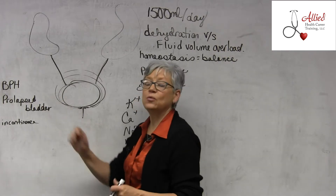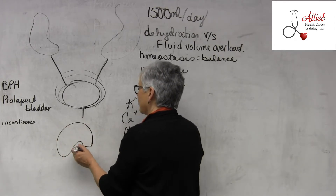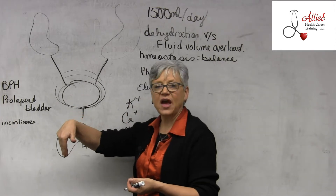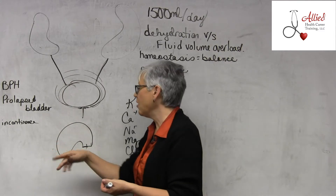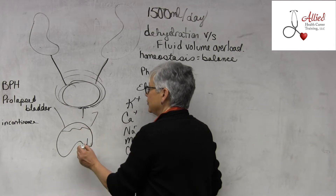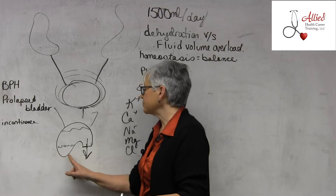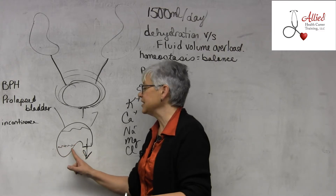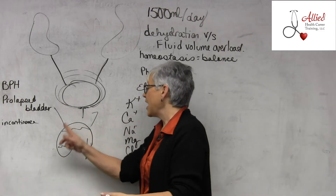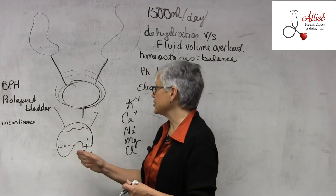In women, we tend to see prolapsed bladders due to childbirth and gravity — the bladder just kind of plops over. If a woman has had a hysterectomy, it can also cause the bladder to fall. What happens is the bladder fills with fluid, you urinate, but you're left with extra urine — urinary retention. That urine sits and sediments, which can clearly lead to a bladder infection.